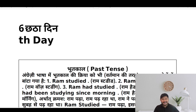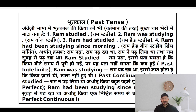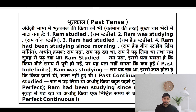There are four types of past tenses and we will be studying them one by one. First one is past indefinite — 'Ram studied.' Second, past continuous — 'Ram was studying.' Past perfect — 'Ram had studied.' Or past perfect continuous — 'Ram had been studying since morning.'